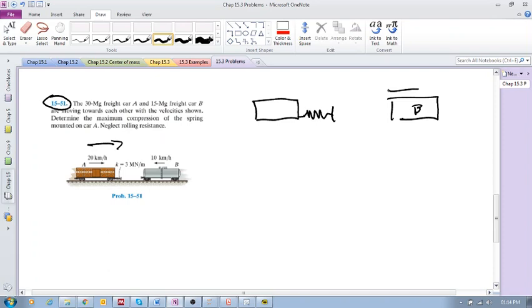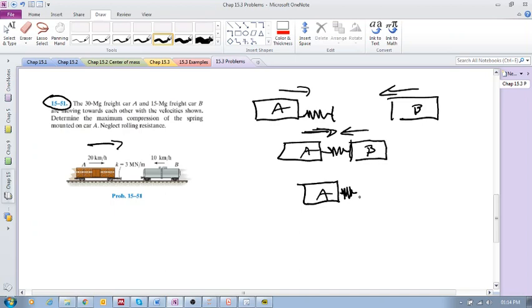We've got freight car A and the spring, and we've got freight car B moving that way, freight car A moving that way. Then at some point the spring touches, but they're still moving toward each other. Now the spring begins to get engaged. The spring gets completely compressed as much as it can—maximum compression.